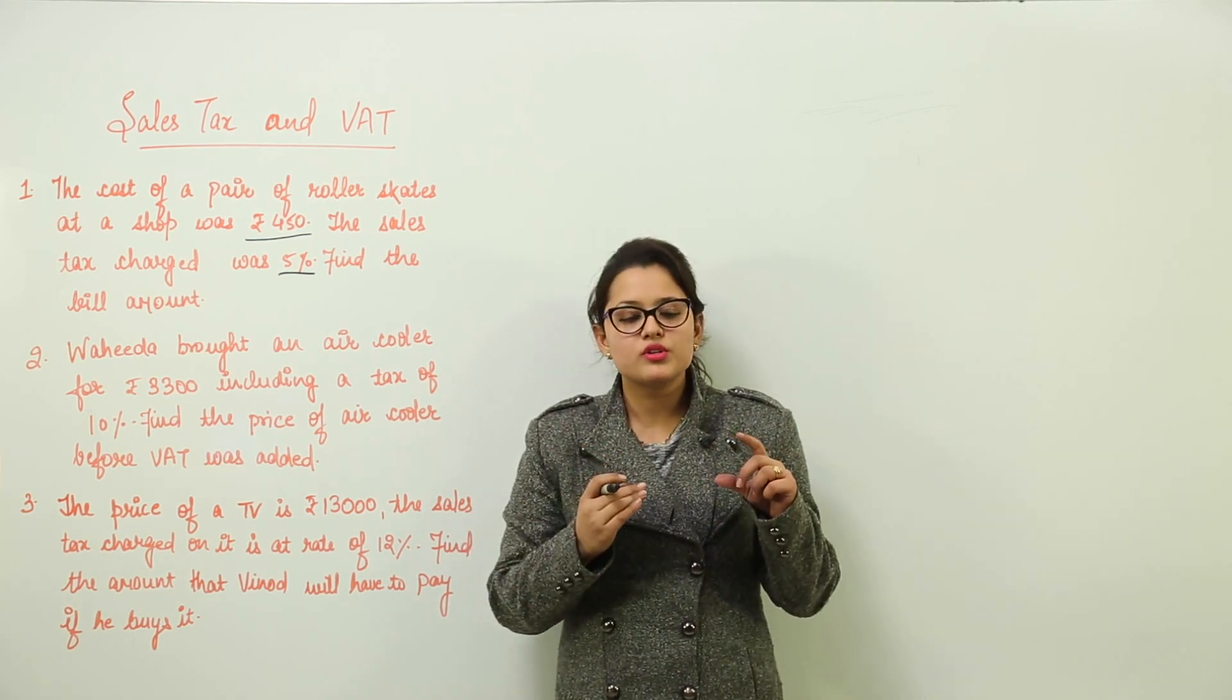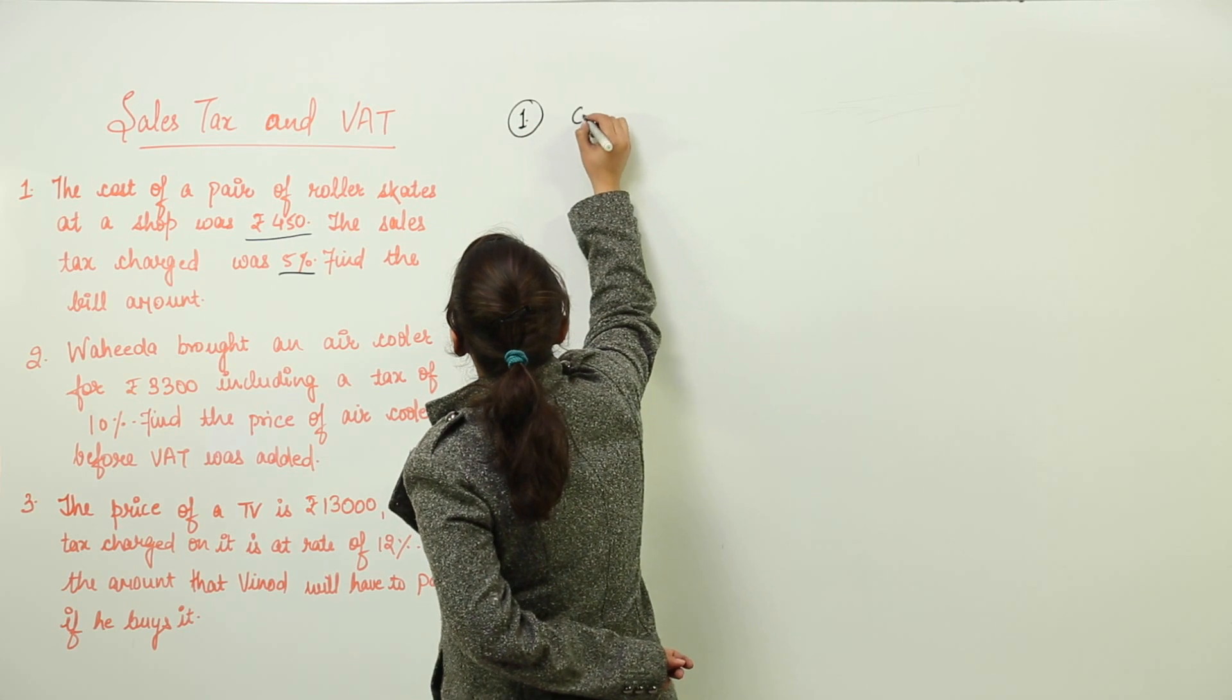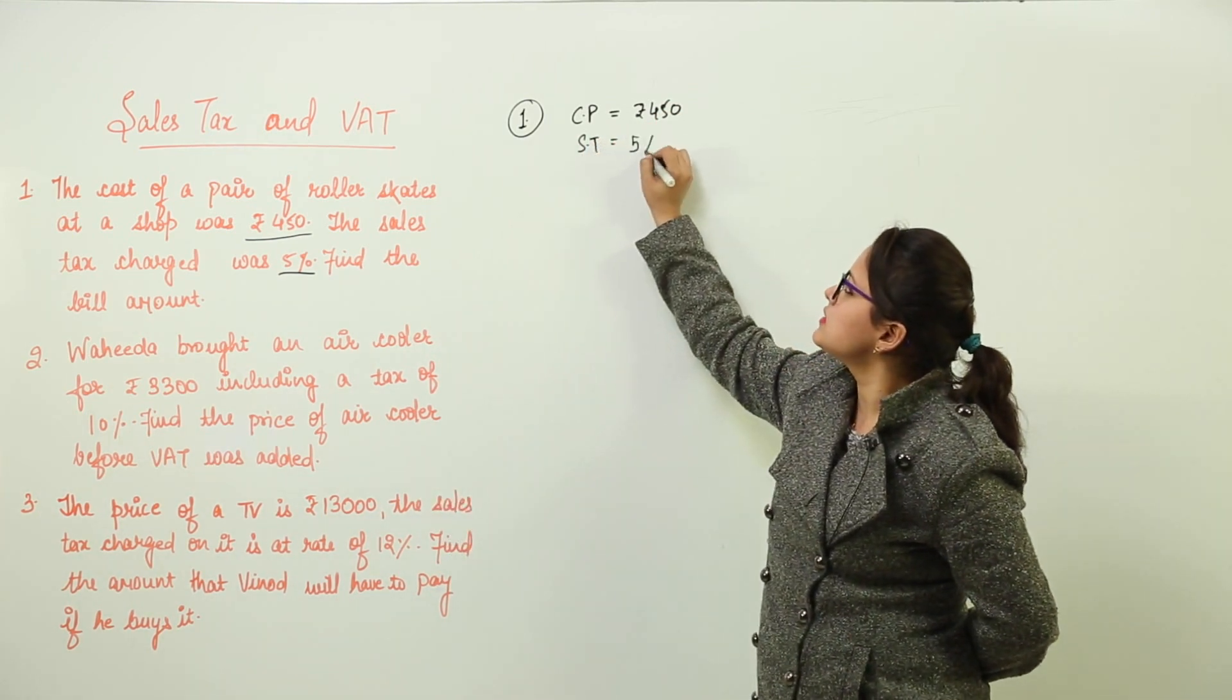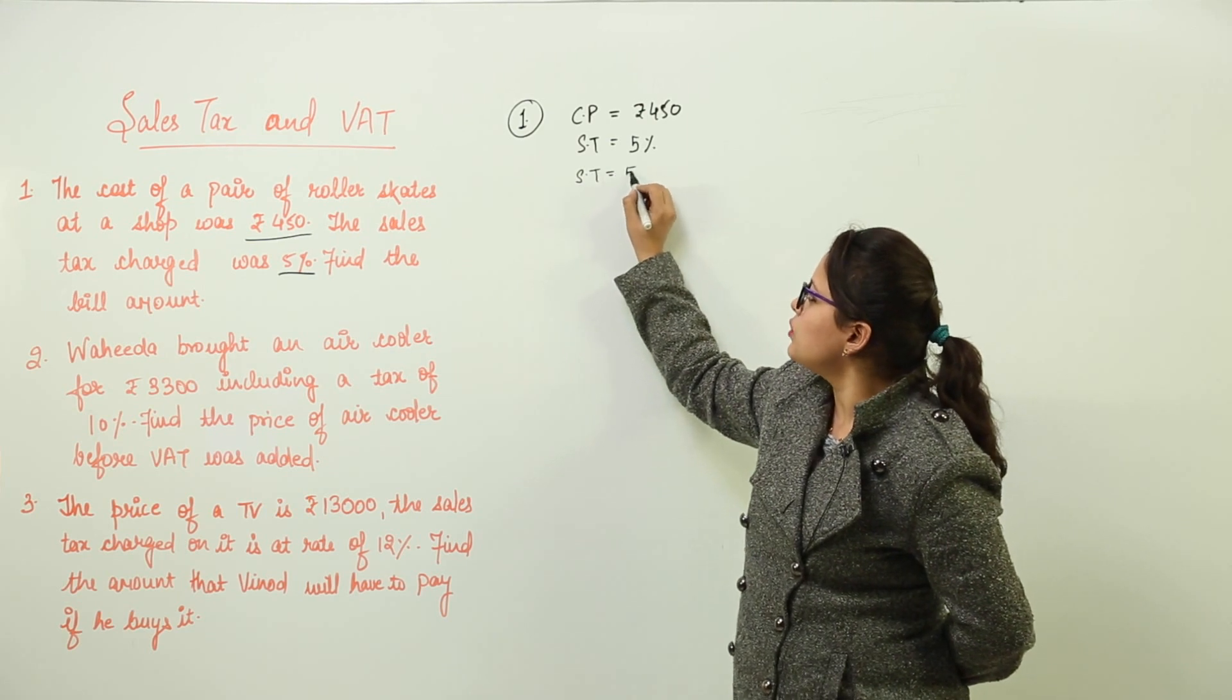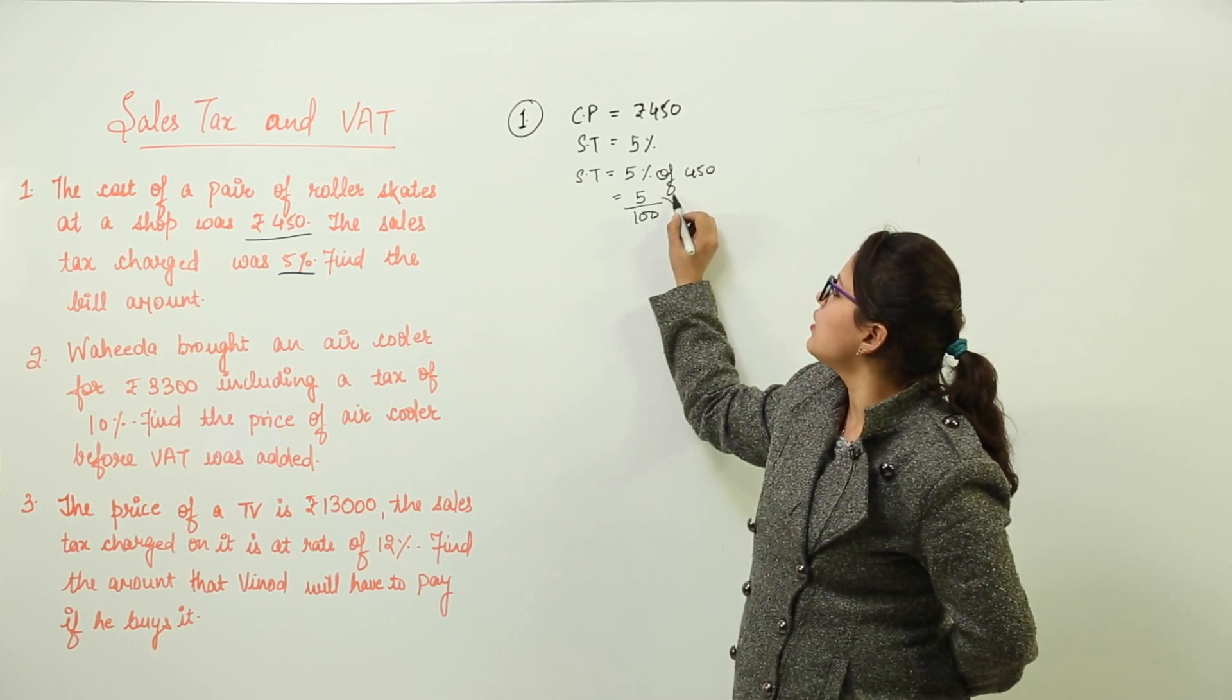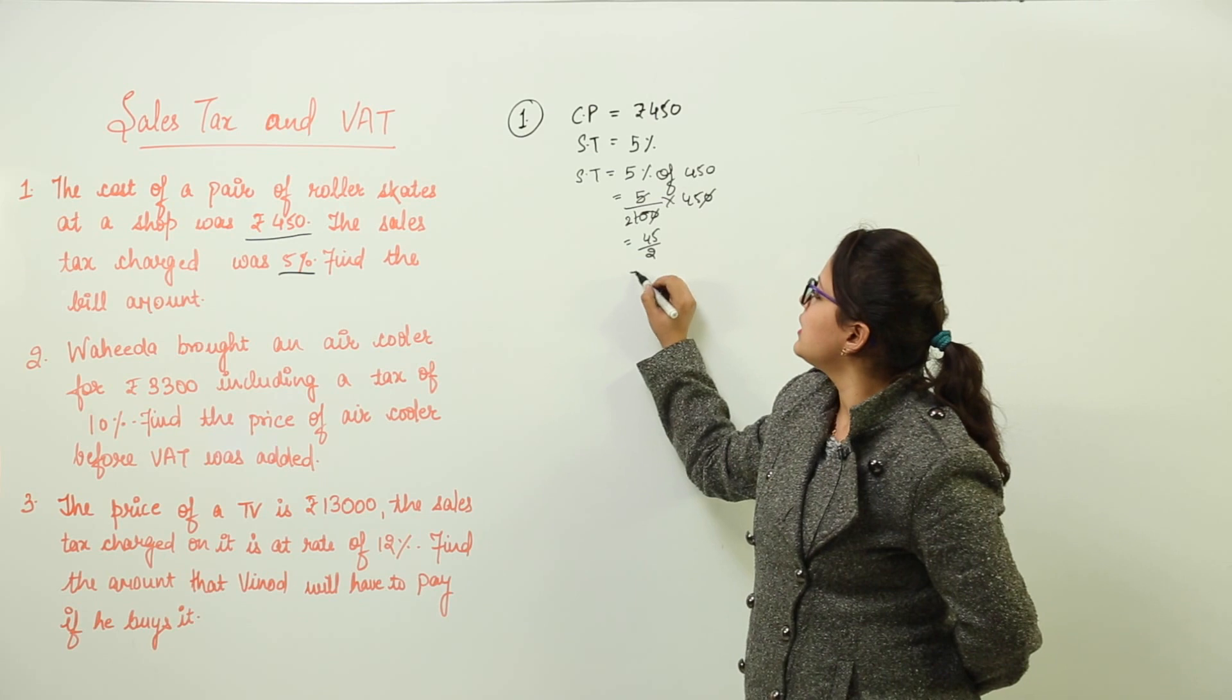So let us solve it now. The first question has CP given as ₹450 and the sales tax given as 5%. Now if you want to calculate the amount of sales tax, that would be 5% of CP, that is 5% of 450. So 5 upon 100 of 450.